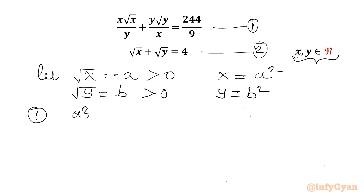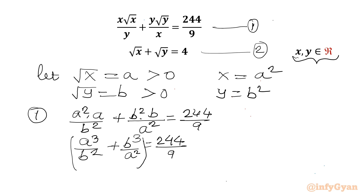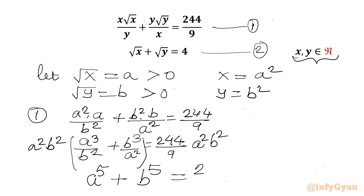Rewriting equation 1: x√x becomes a² · a / b² and y√y becomes b² · b / a², giving us a³/b² + b³/a² = 244/9. Multiplying both sides by a²b², we get a⁵ + b⁵ = (244/9) · a²b².